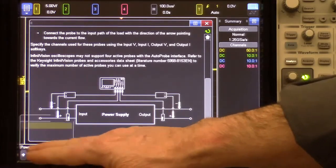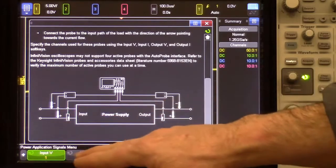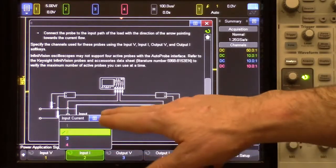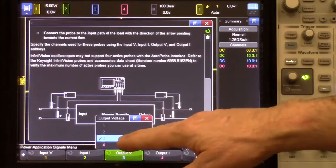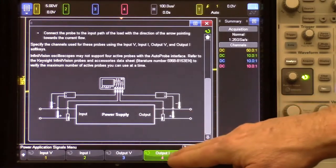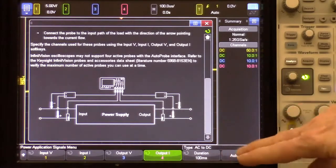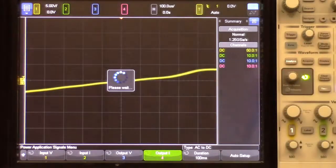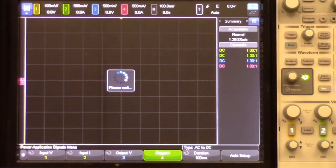And here's where I can define input voltage is channel one, input current is channel two, output voltage is channel three, output current is channel four. At this point, I'll just press auto setup.